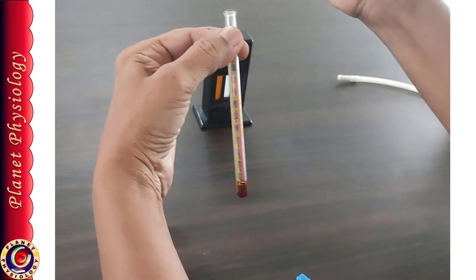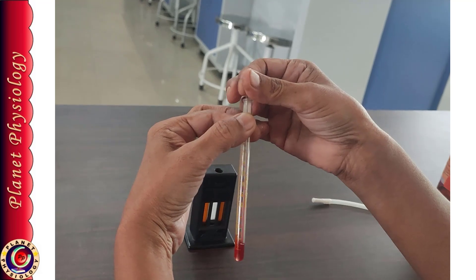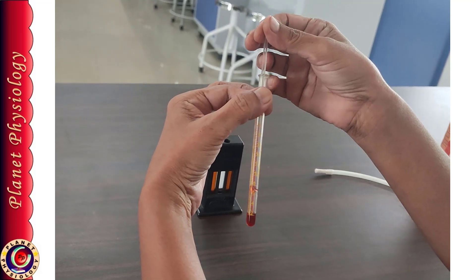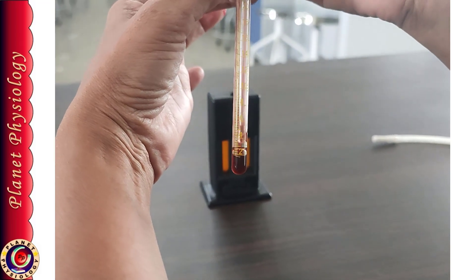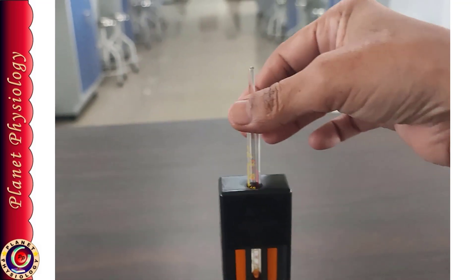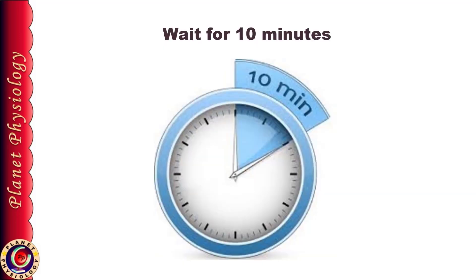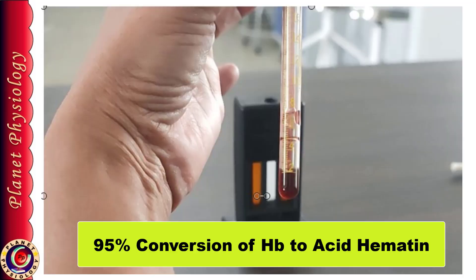Take out the pipette and insert the stirrer into the tube with its flat end inside. Mix the contents by rotatory action of the stirrer. Once the stirrer is placed inside the tube, keep it inside throughout the experiment to prevent loss of contents. Place the tube back into the hemoglobinometer and wait for 10 minutes. During this time, the acid causes hemolysis and converts hemoglobin to acid hematin. Although the color change is immediate, the reaction takes 10 minutes to complete, during which 95% of the hemoglobin gets converted to acid hematin.